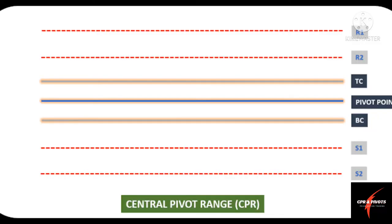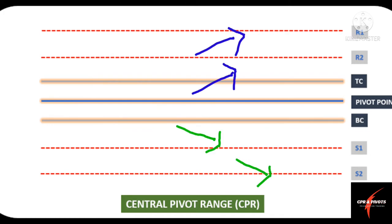Now, you may already know what CPR and Pivot Points are. There are a lot of videos on YouTube about CPR, but nobody talks about how they actually trade using the CPR strategy. Anyway, CPR acts like a strong resistance and support on the chart. Above the CPR, there are two resistance levels — R1 and R2.